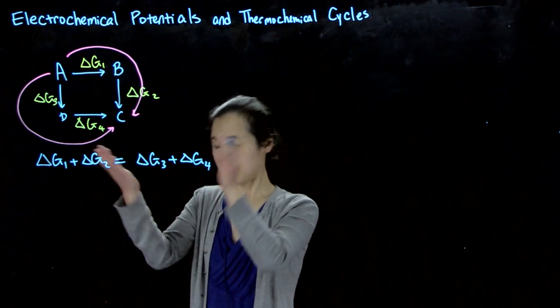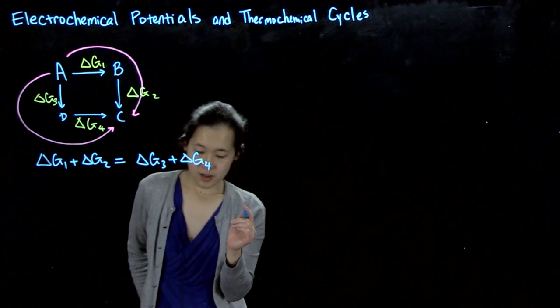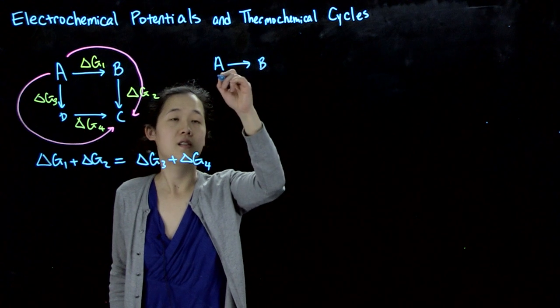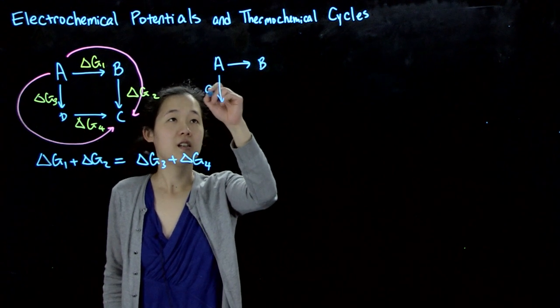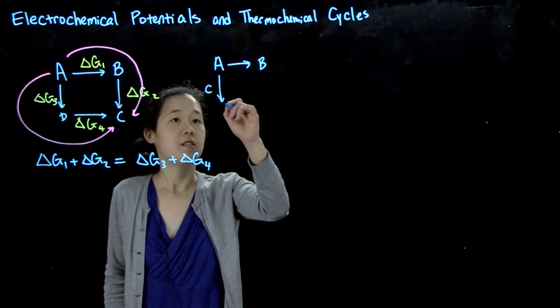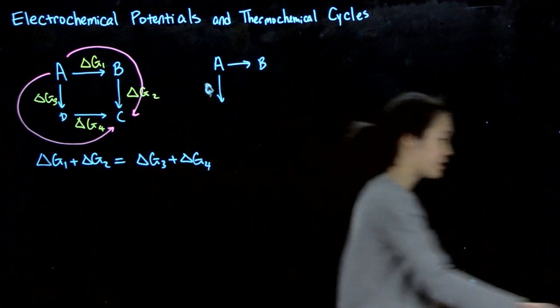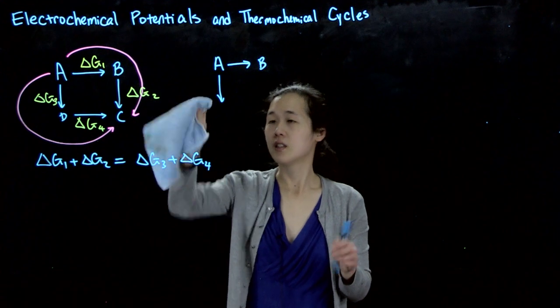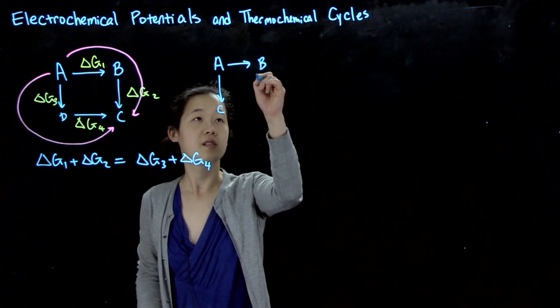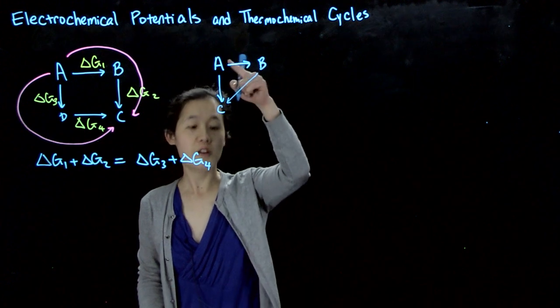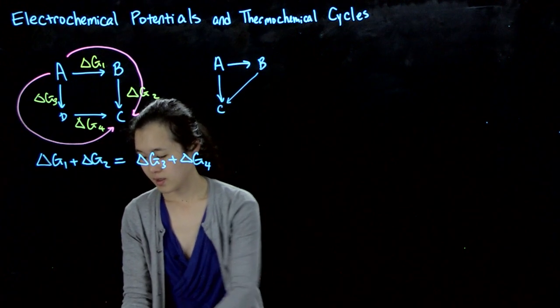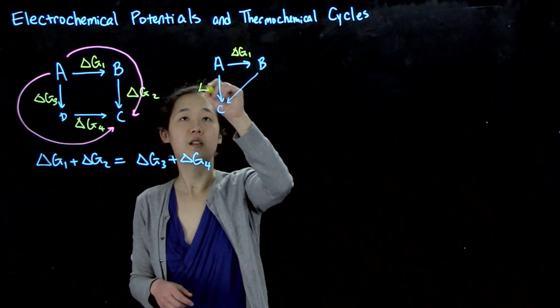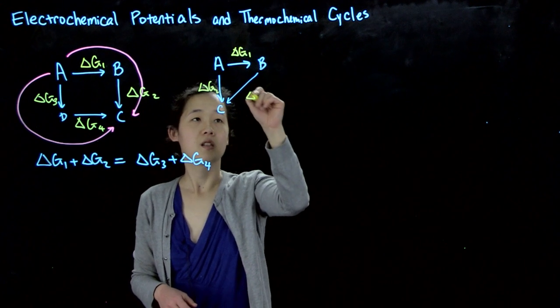By the same token, if we could do a three-step pathway, for example, if we wanted to do A going to B, this goes to C, and then this goes to C, and let's say B goes to C. If we want to find out this energy, so delta G1, delta G2, delta G3...